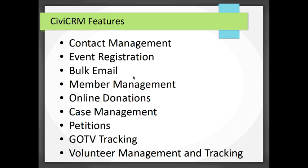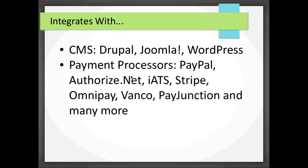Using an extension called CiviVolunteer, you can manage volunteers and track different volunteer capacities based on what someone is capable of doing, since organizations need volunteers for different kinds of things. Because CiviCRM is open source, it integrates well with many different systems. The integration with your CMS will vary — it's tightest with Drupal since that was the first CMS it was built with, then Joomla, and WordPress has only been supported for about three years.